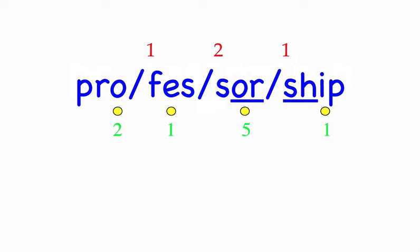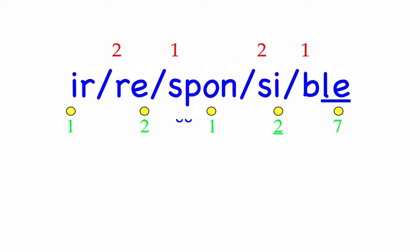Irresponsible. He acted in an extremely irresponsible manner. Five syllables. First syllable: Ir, two sounds, I-R. Re, two sounds, R-E. Spon, four sounds, S-P-A-N. Si, two sounds, S-I. Bull, two sounds, B-L. Ir-re-spon-si-bull. Mark the word. Irresponsible.